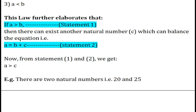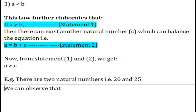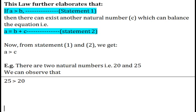Example, there are two natural numbers, that is, 20 and 25. We can observe that, 25 is greater than 20.